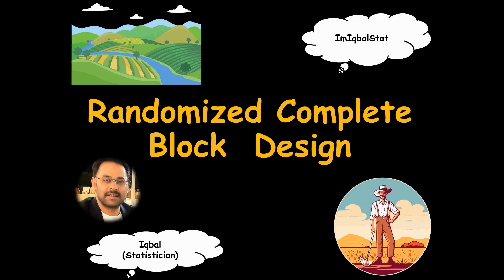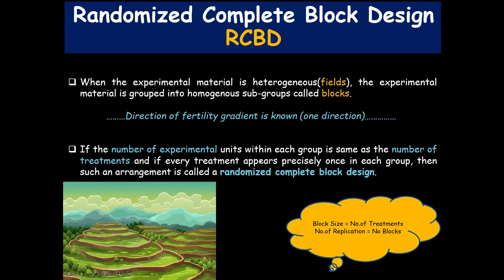Welcome back. In this week we will try to learn some of the basic concepts involved in execution and implementation of a very important and widely used experimental design across agricultural sciences and forestry, especially when conducting experimental trials in fields. That design is known as Randomized Complete Block Design, or RCBD. This experimental design is usually used whenever the experimental material is heterogeneous, especially in fields.